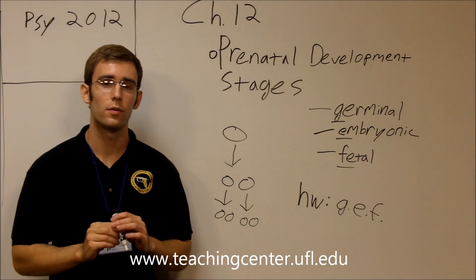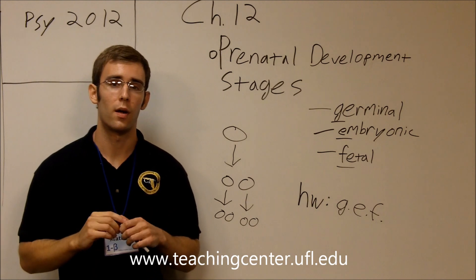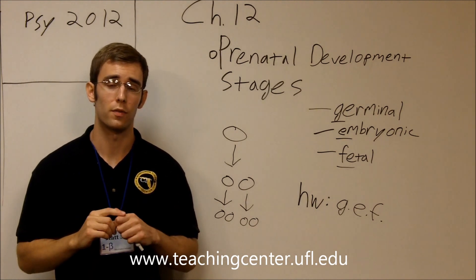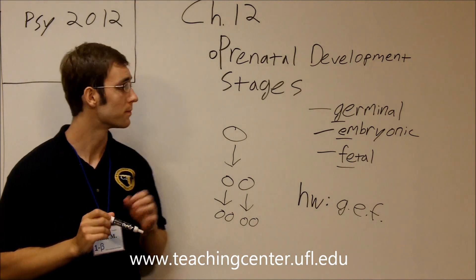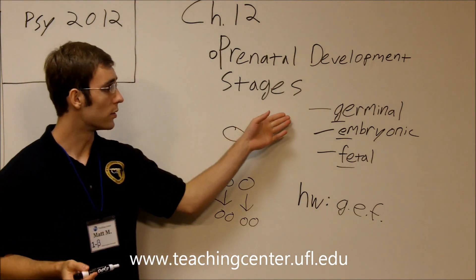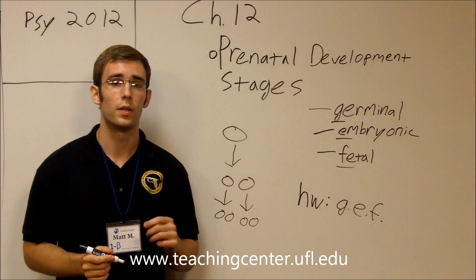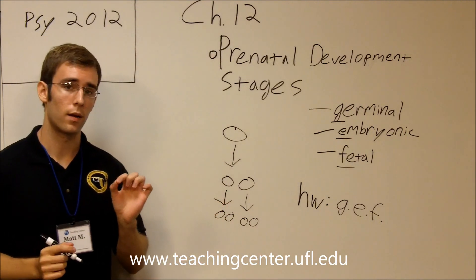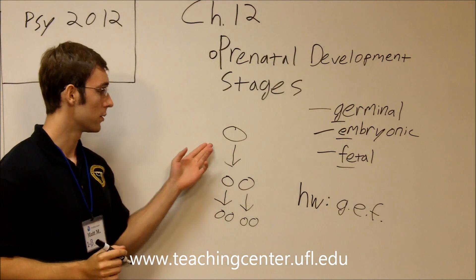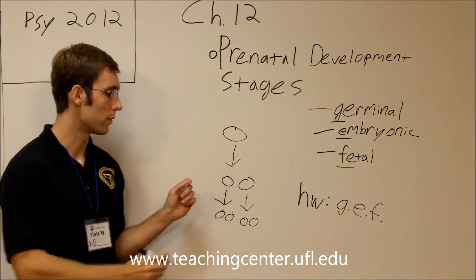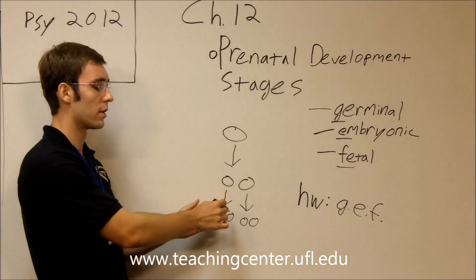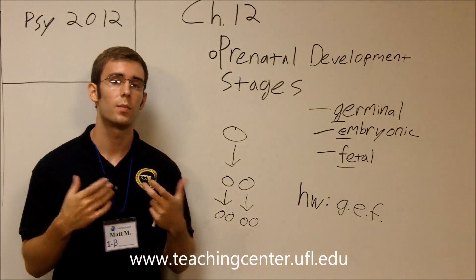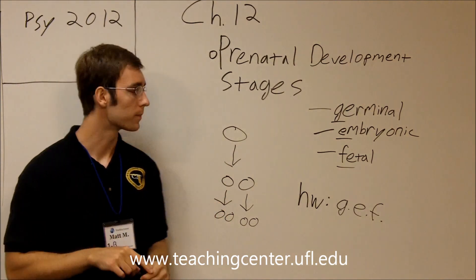We want to talk for a minute about the stages of prenatal development. The germinal stage begins with the zygote — that's a single cell. This cell splits into two cells, those cells split into cells, and so on. They keep dividing.